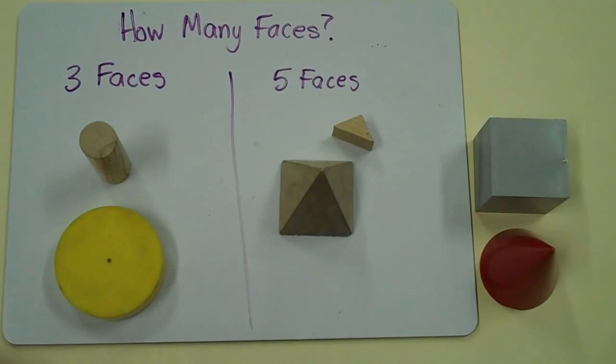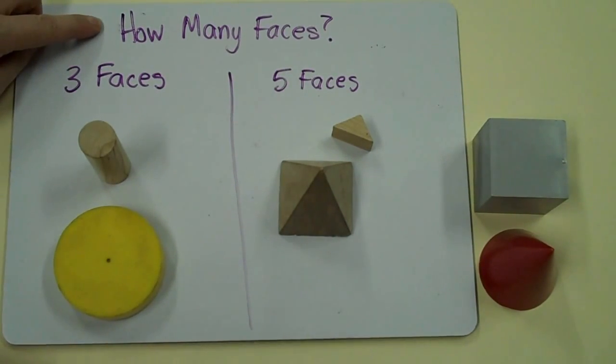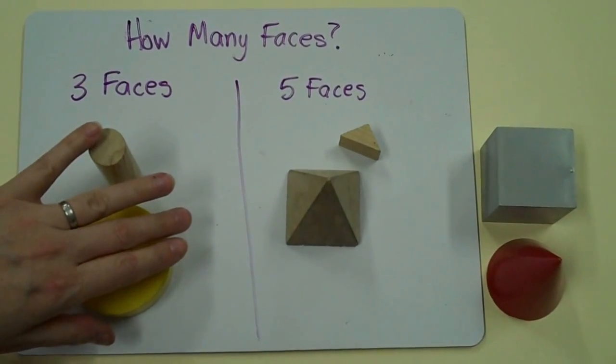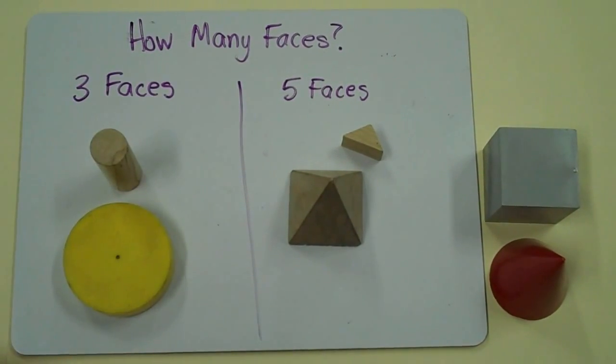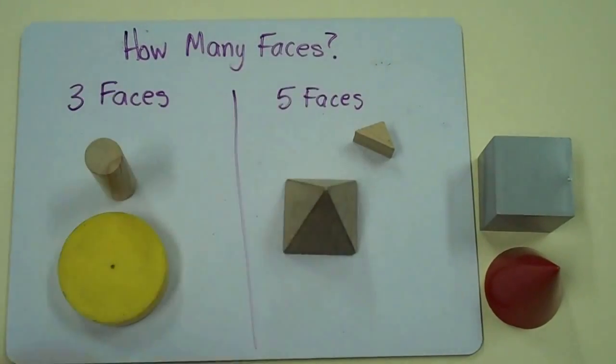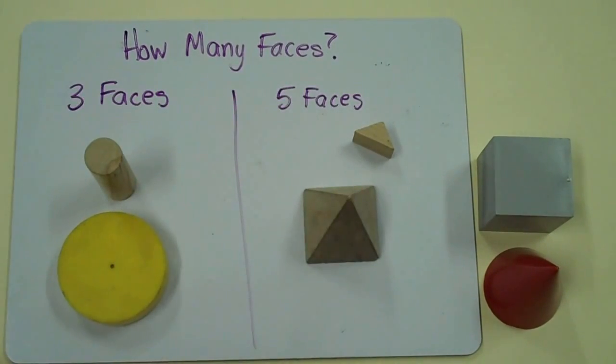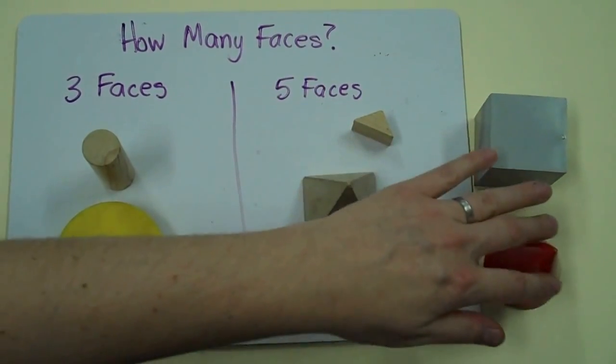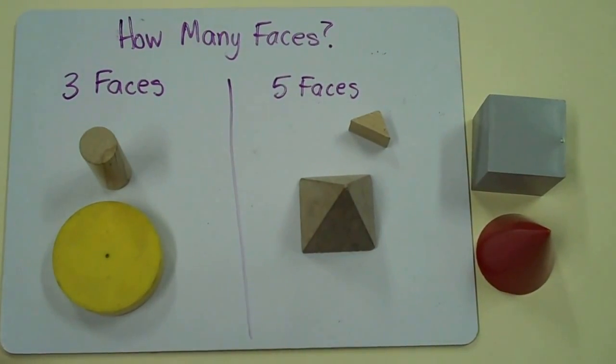Finally, I just need to double check my work to make sure it makes sense. My rule is how many faces, so each group has to be about faces. Cylinders have three faces, so they belong in this group. This prism has five faces, and this pyramid has five faces, so they're correct. A cube has six, and a cone has two. They don't belong in either group.